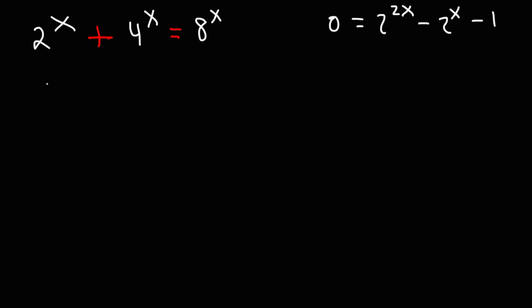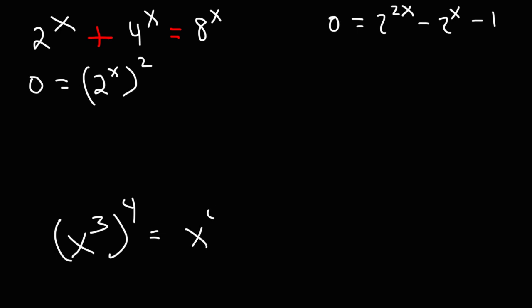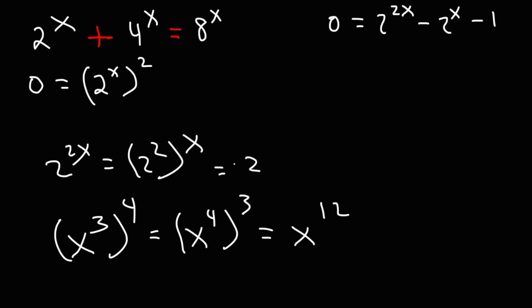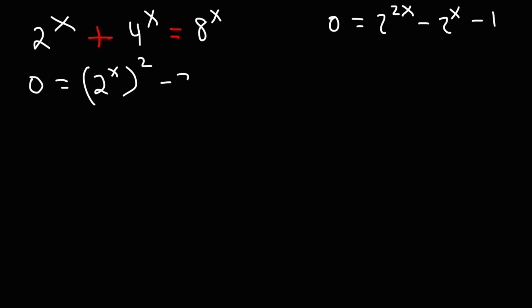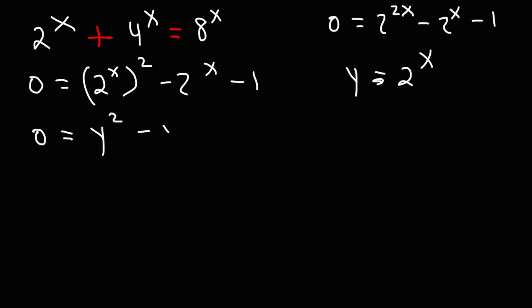Now, 2 raised to the 2x can be rewritten as 2 raised to the x, squared. For instance, x cubed raised to the 4th power can be rewritten as x to the 4th raised to the 3rd power, because 3 times 4 equals 12. So 2 to the 2x can be rewritten as 2 to the x raised to the 2nd power. What we want to do next is use substitution — we're going to replace y with 2 raised to the x. So we have 0 equals y squared minus y minus 1.